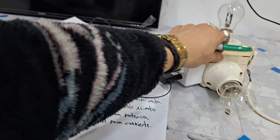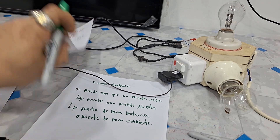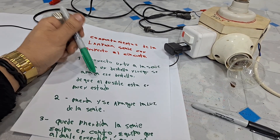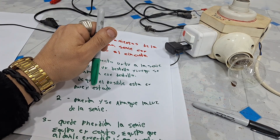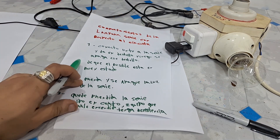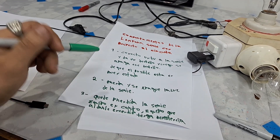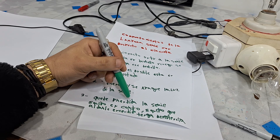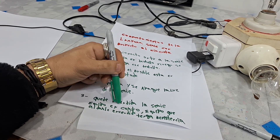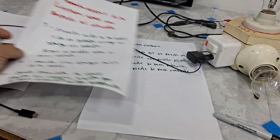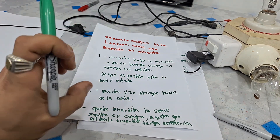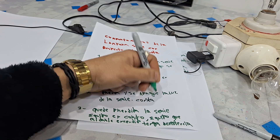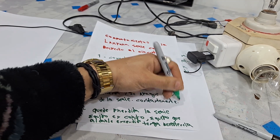Esos son los 4 comportamientos que más he visto con respecto a la lámpara serie. Número 1: conecto un TV y da un destello y luego se apaga, lo que indica que el fusible está en buen estado. Número 2: prende y se apaga la luz de la serie constantemente, como vimos con el Samsung. Número 3: queda prendida la serie, equipo en corto o equipo con resistencia/motor de alta potencia. Número 4: no prende nada, fusible abierto o fuente de poca potencia.